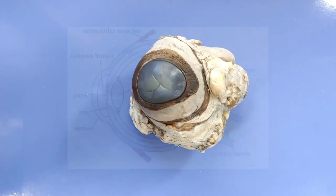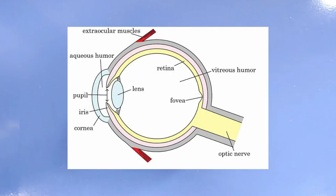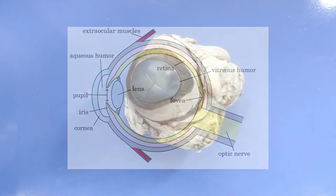The human eye belongs to a general group of eyes found in nature called camera type eyes. The camera type eye is an incredibly complex organ that sends visual information to the brain by using a lens to focus light on a structure called the retina, which we'll see later.